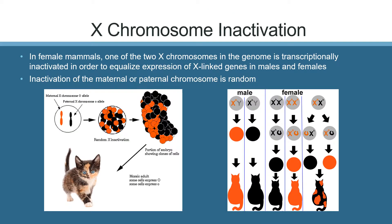It was studies performed by Mary Lyon on X inactivation that suggested a mechanism existed to silence genes. When looking at X chromosomes under a microscope, she found that one copy of the X chromosome appeared to be shrunken and dark. These Bar bodies, first observed by Murray Barr in 1949, represented completely inactivated chromosomes in which the DNA sequence was intact.